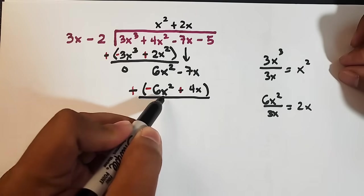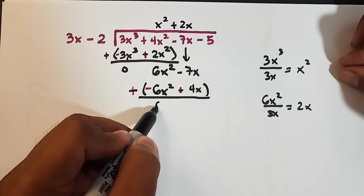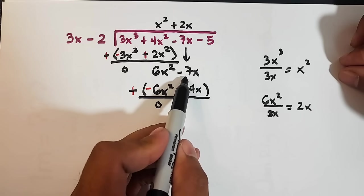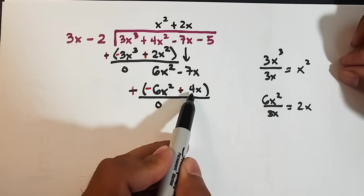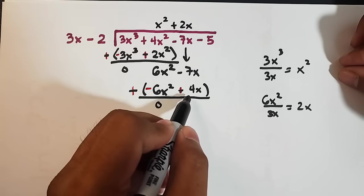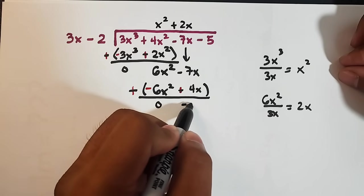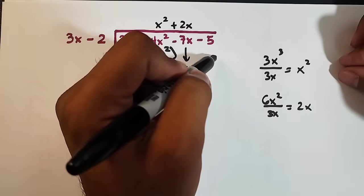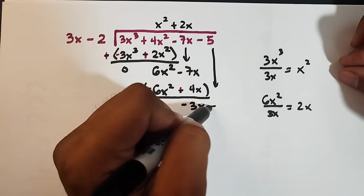So what will happen? 6x square plus negative 6x square. That will become 0 again guys. Negative 7x plus positive 7x. That is positive 4x. That is negative 3x. Then bring down this last one which is negative 5.